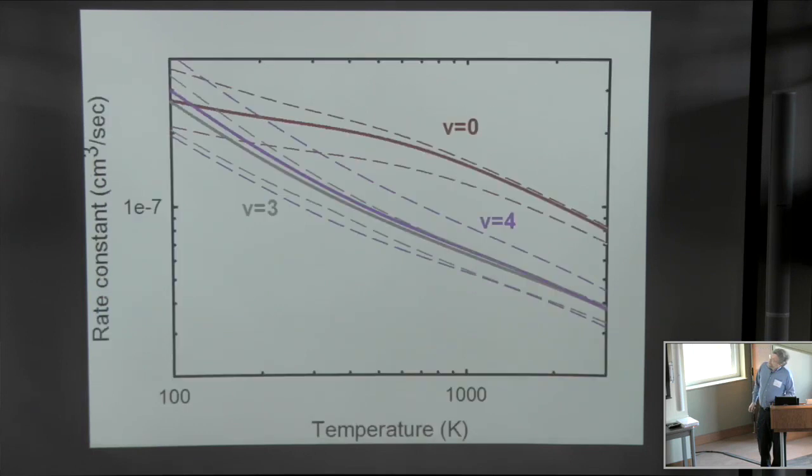And this is the rate coefficient again for v=0 now shown with v=3 and v=4. You can see v=3 and v=4 are very similar over the whole range of electron temperatures. But v=0 is greater than one of those, over most of the temperature range above room temperature.